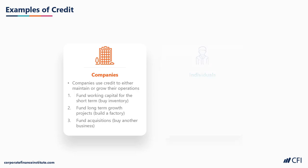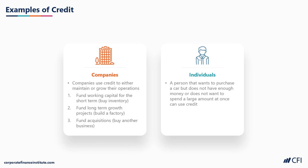On the personal side, individuals also use credit. For example, to buy a car that they can't afford in the moment but know they have the income to support monthly payments for. Or a student who wants to go to university but doesn't have any income at the time but knows that in the future they will have income from having completed university, so they would use credit to pay for their university program.